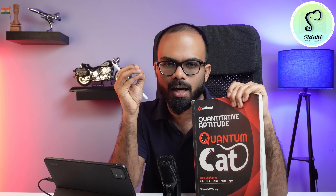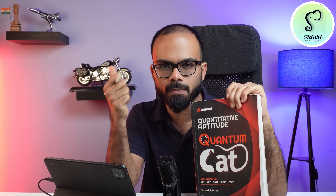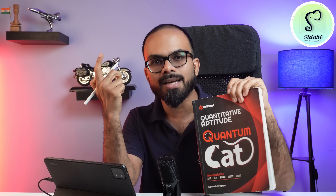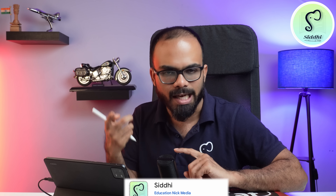The source is the Quantum CAT book written by Sarvesh K Varma. In this book, chapters 19, 20 and 21 are focused on probability, permutations and combinations, and coordinate geometry. But just for three chapters you don't have to buy this book. If you already have it, well and good. If you want a scanned copy of those three chapters, tell me in the comment section and we will upload it on the Siddhi app as well as our Telegram channel.